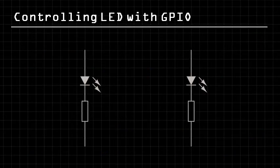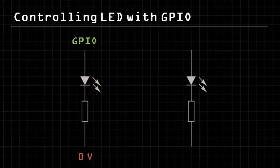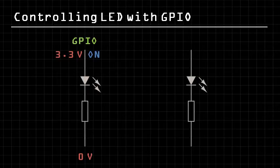As we've seen in the previous video, we can attach a GPIO pin and ground pin like this. If we set the pin high to 3.3V, the LED is on. If we set the pin low to 0V, the LED is off.